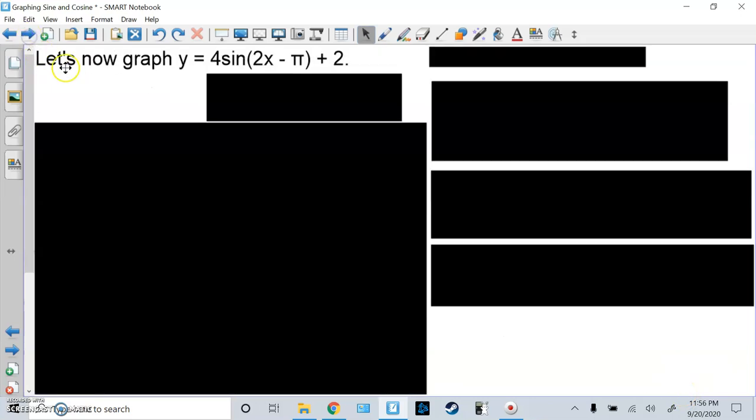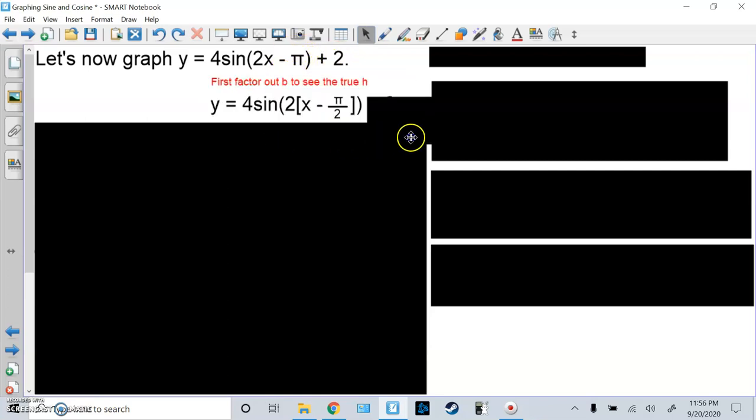Here's a harder problem. We're going to graph y equals 4 times sine of 2x minus pi plus 2. Now, a lot of people think that h is pi, but that's wrong. Remember, you first have to factor out b to see the true h. So if I take out 2 here, if I divide both of these by 2, it would be 2 parentheses x minus pi over 2. So really, we're going to write pi over 2 and not write pi.